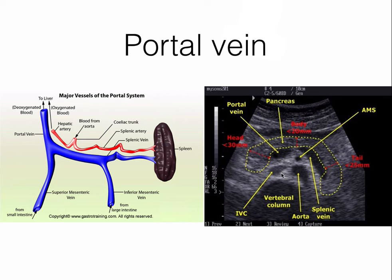On a transverse view with the probe placed a few centimeters below the xiphoid process with the indicator pointed to the patient's right, you'll see the liver on top. Just below that is the pancreas, which is often hard to visualize. Below that is the splenic vein coursing to the patient's right to become the portal vein. Below that is the superior mesenteric artery — seen as a circle with a very thick or hyperechoic border, often referred to as the mantle clock sign. Below the SMA is the aorta, and between the aorta and SMA there's a vessel coming from the left and coursing into the IVC — this is the left renal vein.